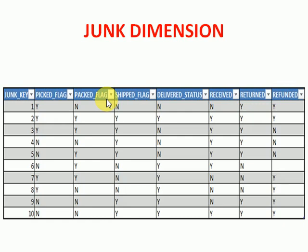For example, you have a rapidly changing dimension or a slowly changing dimension table which has more flag-related columns. When data is getting changed, you will be inserting a new record in your historical record. At that time you will be facing more space-related issues because the data is getting increased very fast — that is a rapidly changing dimension.